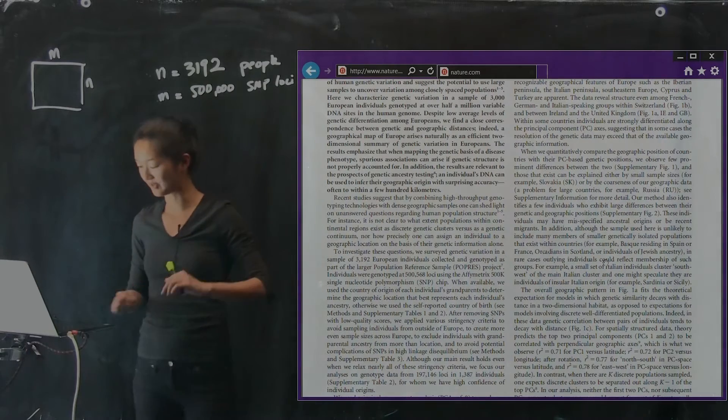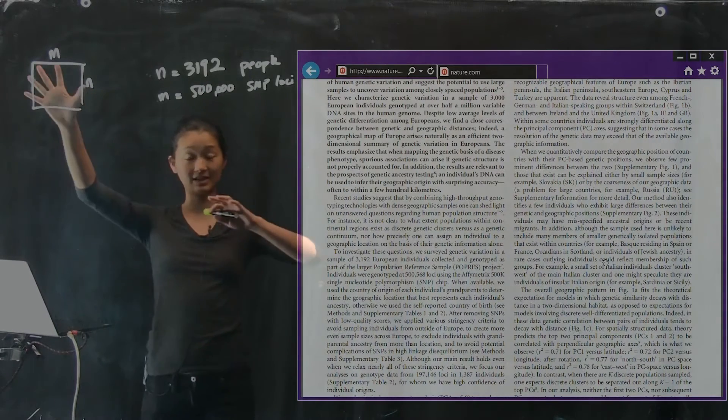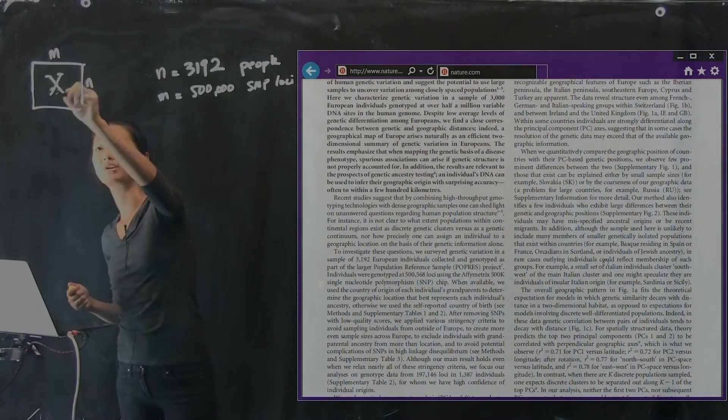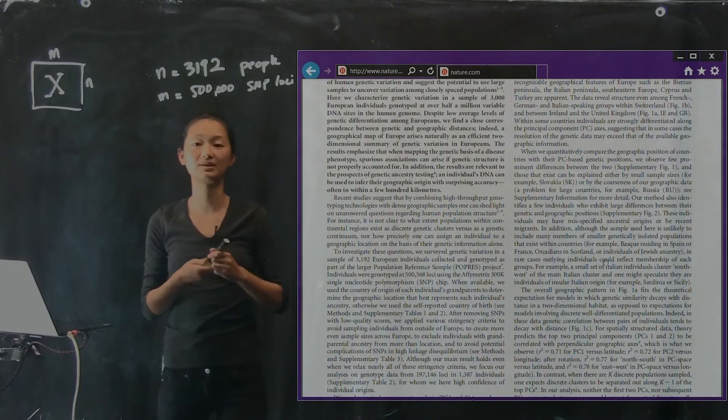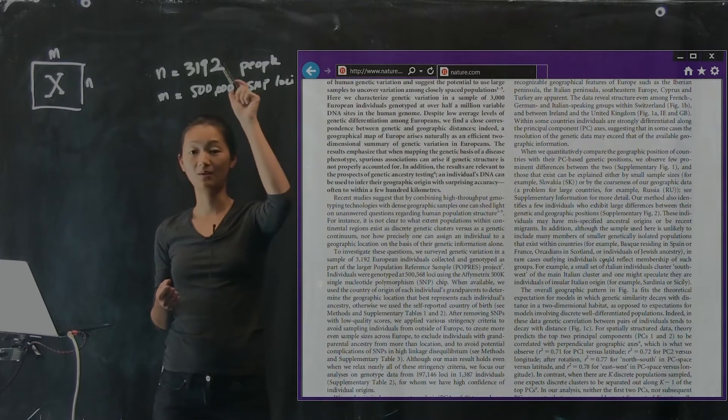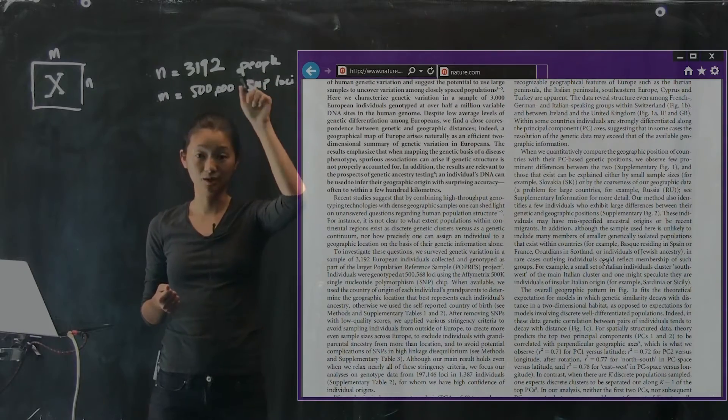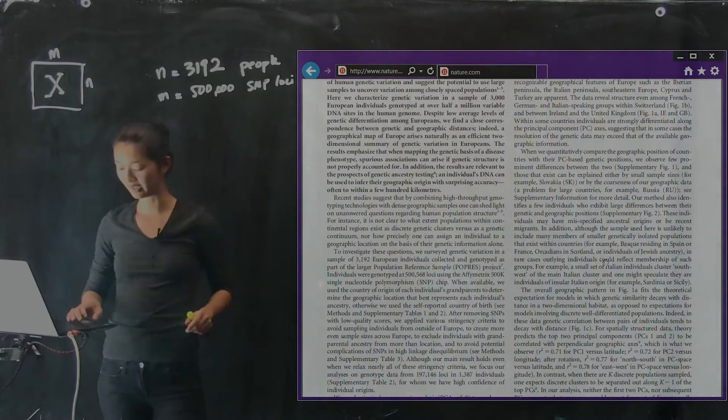It pops up all over the place. And so what these folks did was take this data matrix, this X data matrix that they've collected, which each number corresponds to one particular SNP of one particular individual in their data set.